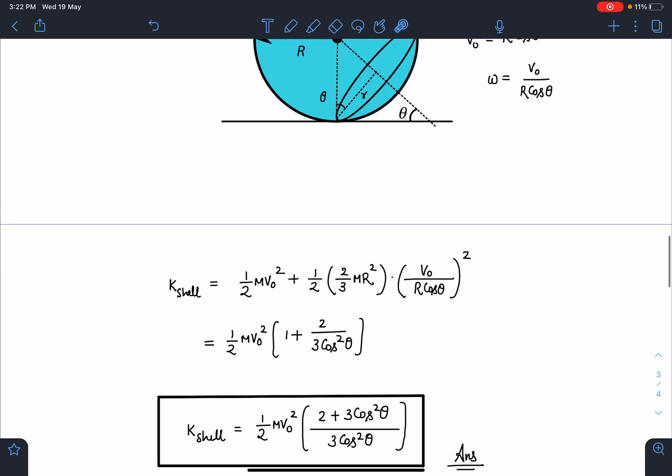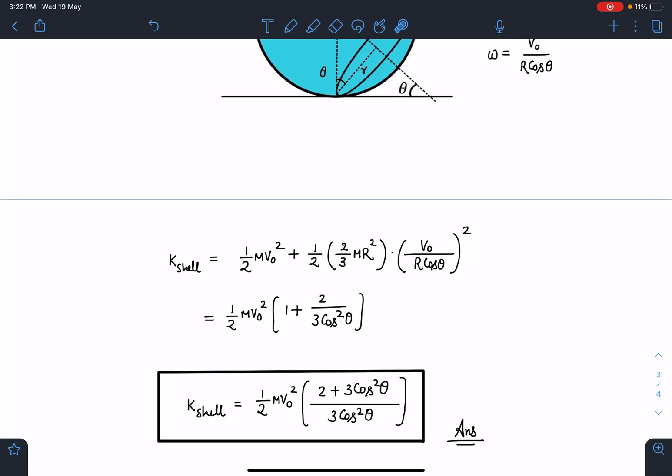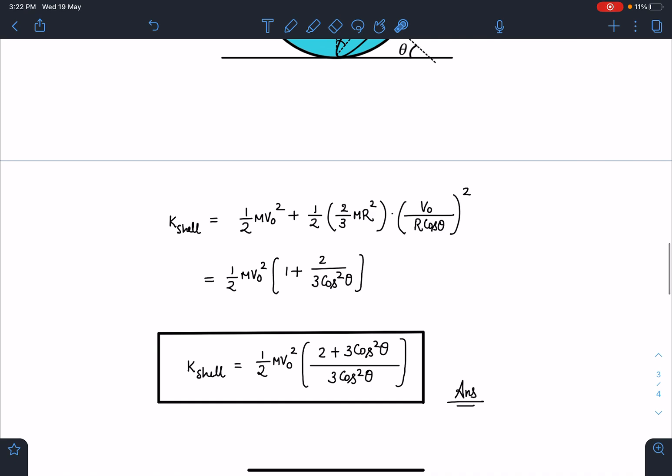Where ω = v₀/(R·cos(θ)). Many terms cancel - R² with R². Taking ½Mv² common, I get 1 plus 2/(3cos²θ).